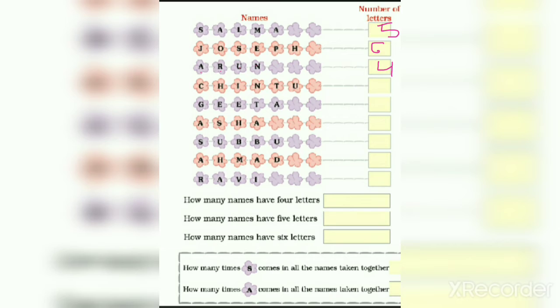C, H, I, N, T. Here we have 1, 2, 3, 4, 5, 6 letters. Next, G, E, E, T, A. 1, 2, 3, 4, 5. Here we have 5 letters.